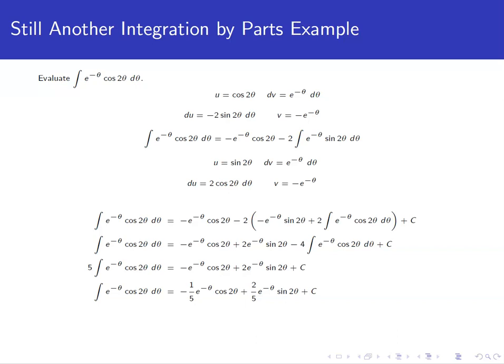Again, we have a product of two things, so we think that integration by parts is probably the way to go. Now, notice that neither of these two functions really is going to get simpler if you take the derivative. So it doesn't really matter which one you let u be and which one you let dv be. You'll get to the same spot if we do this twice.